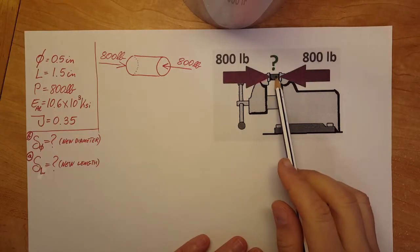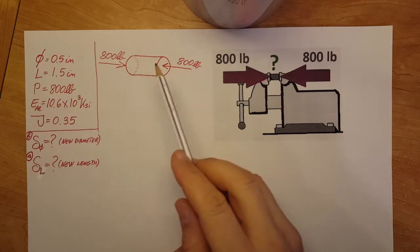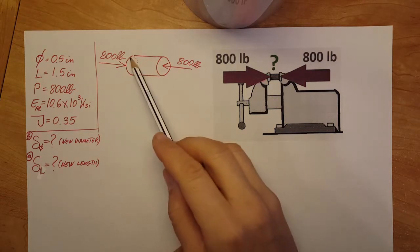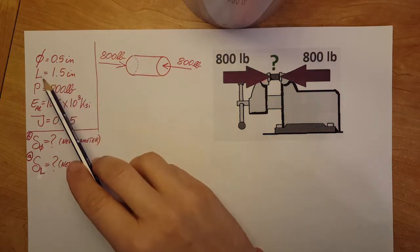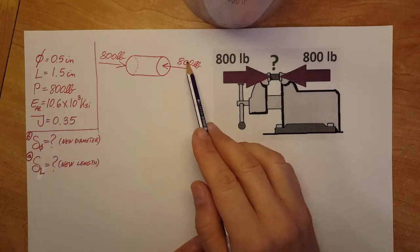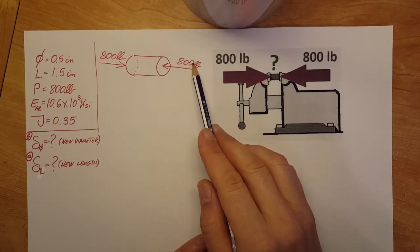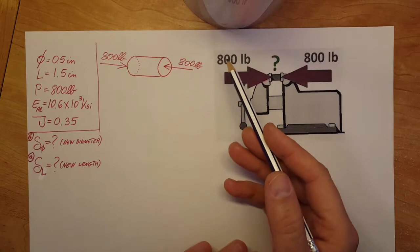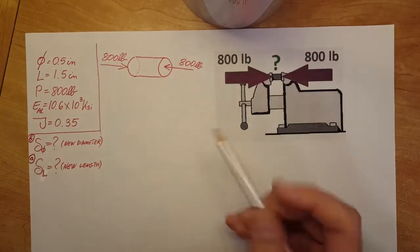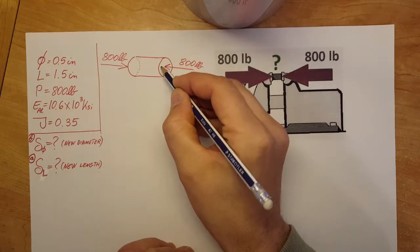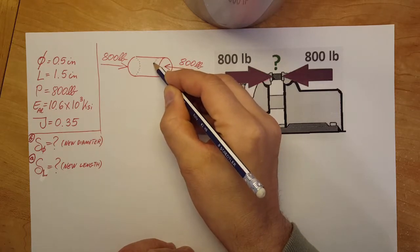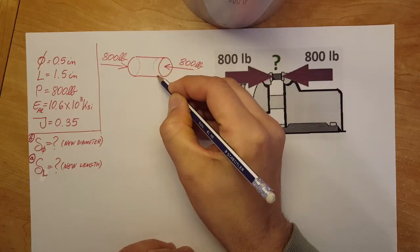First of all, let's take a look at what kind of material we have here. The shape of it is a cylinder with a diameter and a length that's given. So when we're going to apply this 800 pound load to it, it's going to shrink, right?